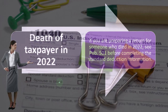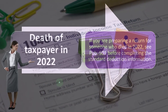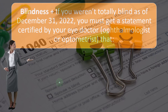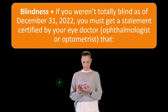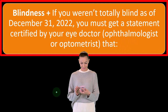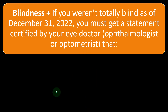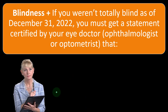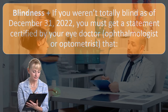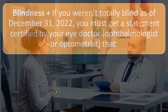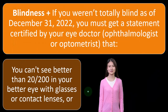Death of taxpayer in 2022: if you are preparing a return for someone who died in 2022, you can see Publication 501 before completing the standard deduction information. Regarding blindness: if you weren't totally blind as of December 31st, 2022, you must get a statement certified by your eye doctor, ophthalmologist, or optometrist. If you're trying to increase the standard deduction by claiming blindness, there's a question of whether you are legally blind — you must get certification from someone for that.